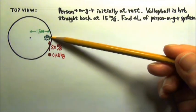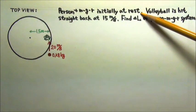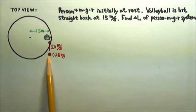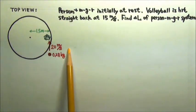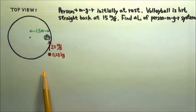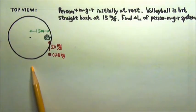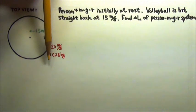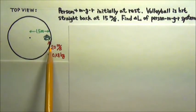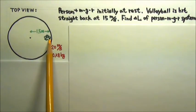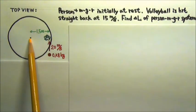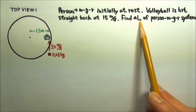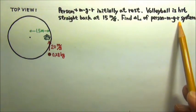A person is sitting on a merry-go-round that is initially at rest. A 0.28 kg volleyball is sent towards the person, reaching the person's hand with a 20 meters per second horizontal velocity as shown in this top view figure. The person hits the volleyball straight back at 15 meters per second. The distance between where the ball is hit and the axle of the merry-go-round is 1.5 meters. Find the change in angular momentum of the person's merry-go-round system.